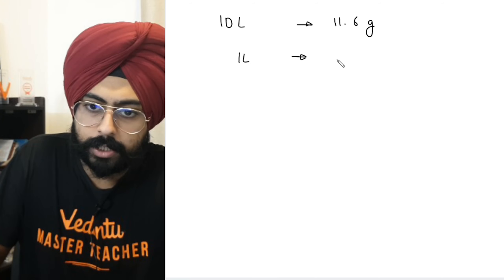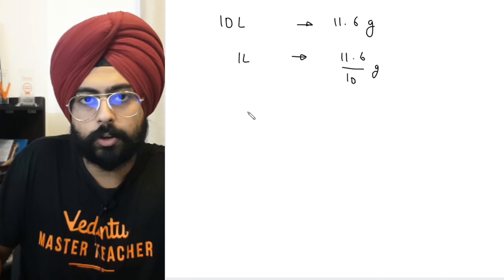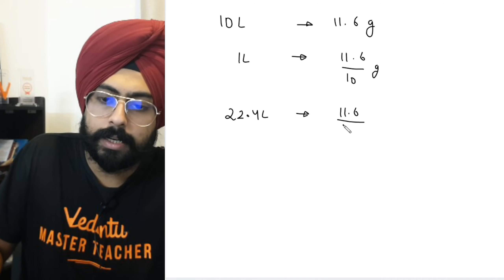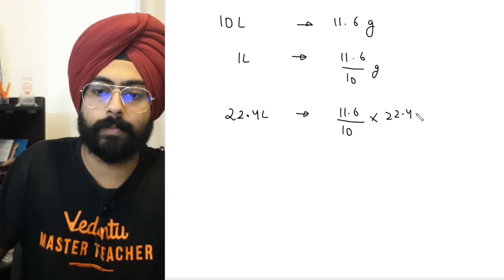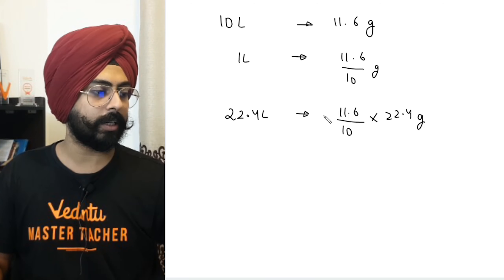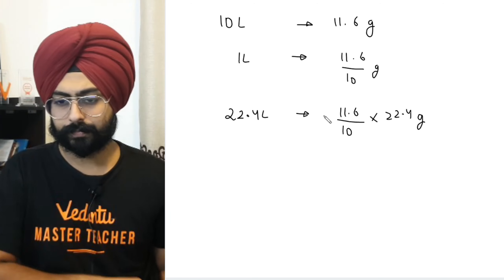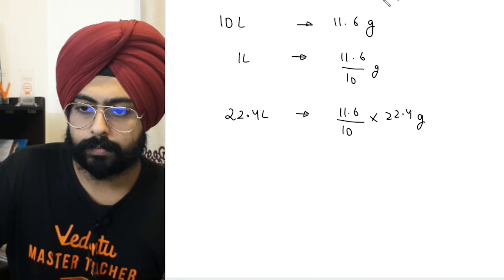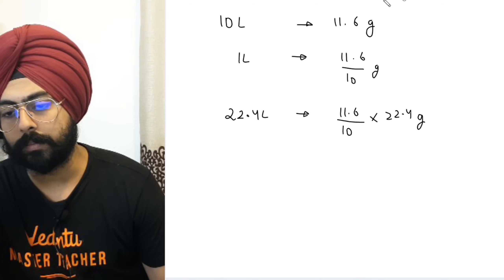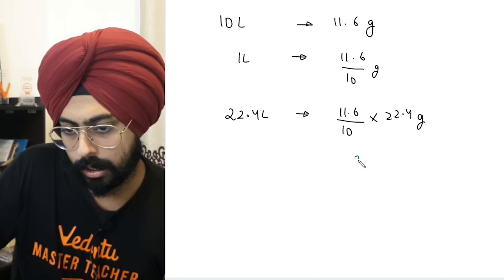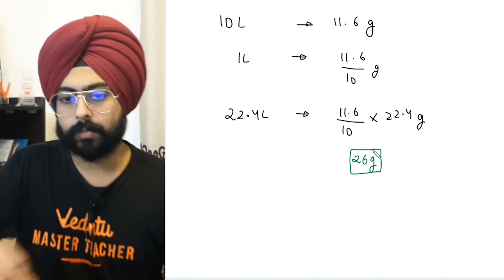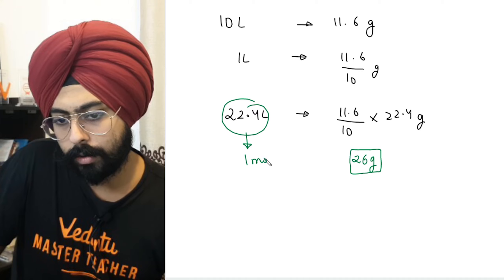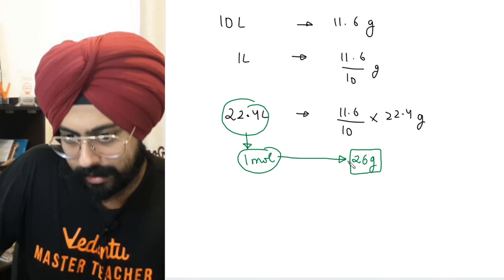The information given is: 10 liters = 11.6 grams. So 22.4 liters = (11.6 ÷ 10) × 22.4 = approximately 26 grams. Since 22.4 liters corresponds to 1 mole, one mole of this gas weighs 26 grams — that is the molecular mass.